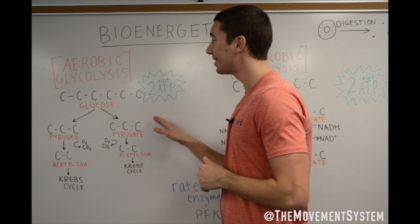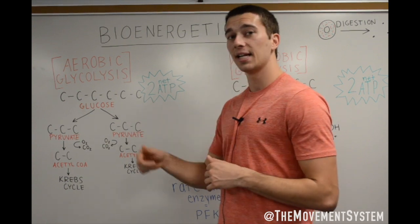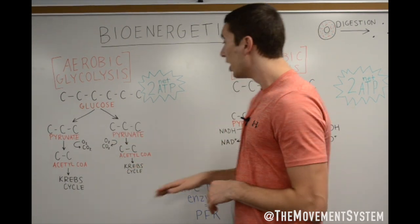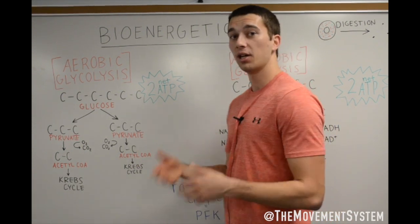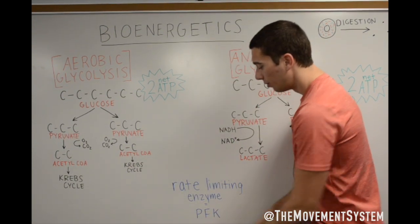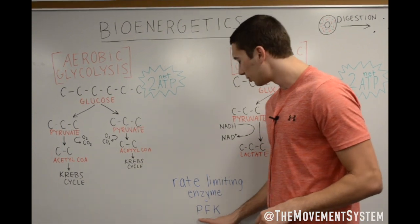Glycolysis is an enzymatic process meaning that enzymes push it to go faster. The rate limiting enzyme meaning the most important enzyme for keeping glycolysis going fast is PFK which is the abbreviation for phosphofructokinase.